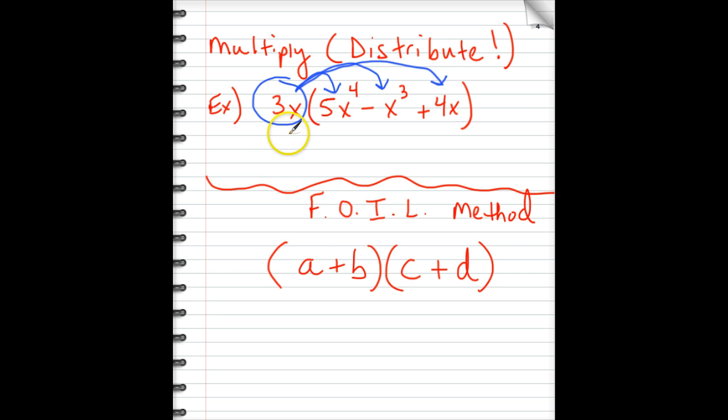So if we do this here, 3x times 5x⁴ is 15x⁵. 3x times negative x³ is negative 3x⁴. And then 3x times 4x is 12x². Now, if you need any help reviewing exponential properties, I do have a video that regards that you might want to check out first.